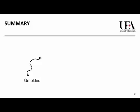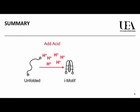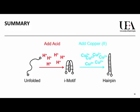In summary, we can take a piece of DNA which is unfolded. We already knew we could fold it up using acid to make the special i-motif structure. But now we know that you can also change its shape further into a hairpin using copper 2 cations. Each of these stages is reversible, so there are now two switches instead of one, and this expands the possibilities for applications in nanotechnology.